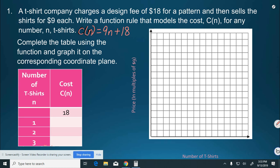Complete the table using the function and graph it on the corresponding coordinate plane. So, $18 is already on the table for C(n). If we don't order any t-shirts at all, we're still going to have to pay that $18. Zero t-shirts cost $18.